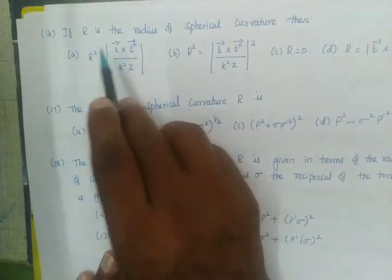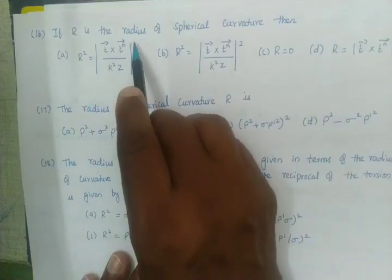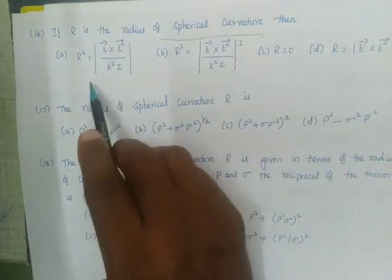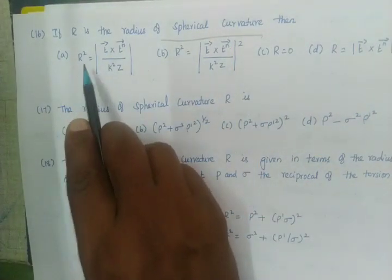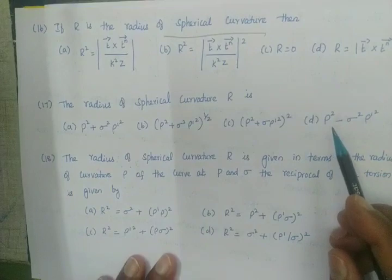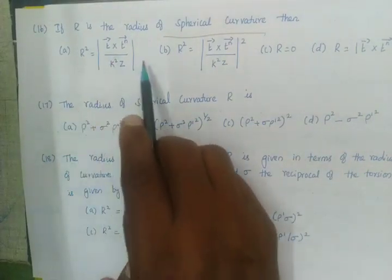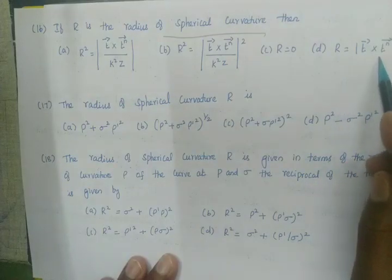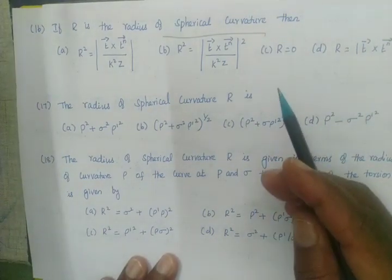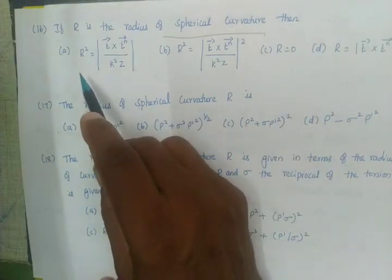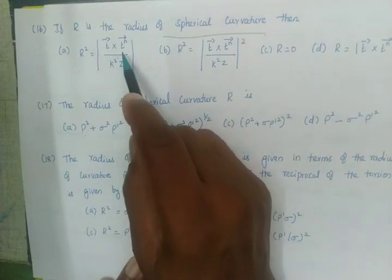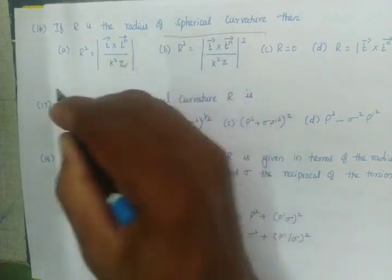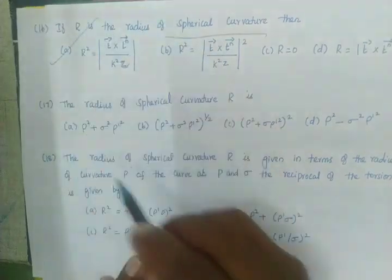If capital R is the radius of spherical curvature, then R² equals T vector times TN vector divided by K². Option A is the right answer for this given expression of spherical curvature.